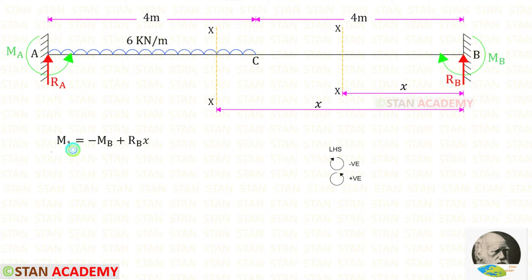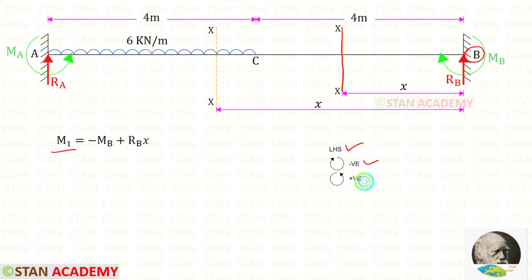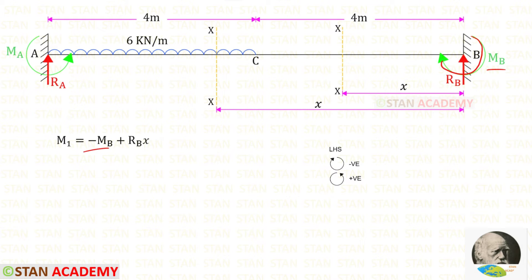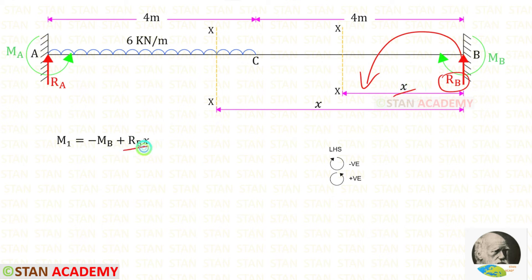Now let us find M1, the moment about the first section. We find moments from point B, following the left-hand side rule: clockwise is negative and anti-clockwise is positive. Mb is acting clockwise, so it is negative. Rb is acting anti-clockwise, so it is positive, giving us Rb times x.